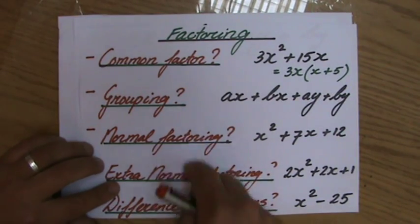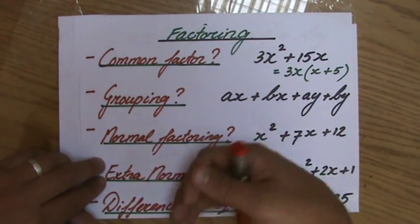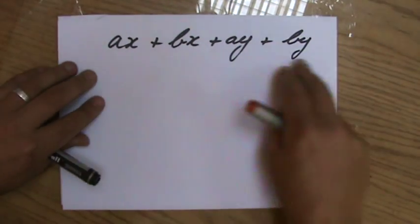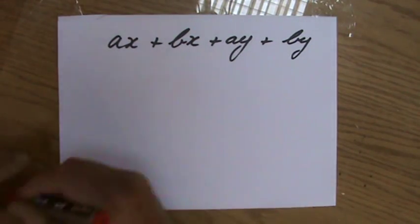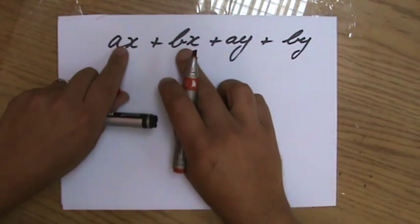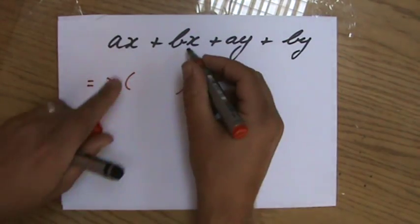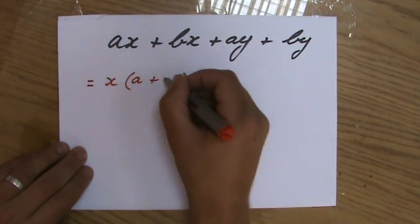The second question you always ask yourself: is it grouping? These questions we will deal with in future videos, by the way. Is it grouping? Yes, it is. Because I have four terms. Fantastic. I'm going to look at the first two terms. What is the highest common factor? It is x in my brackets. If I take out x, A plus B.